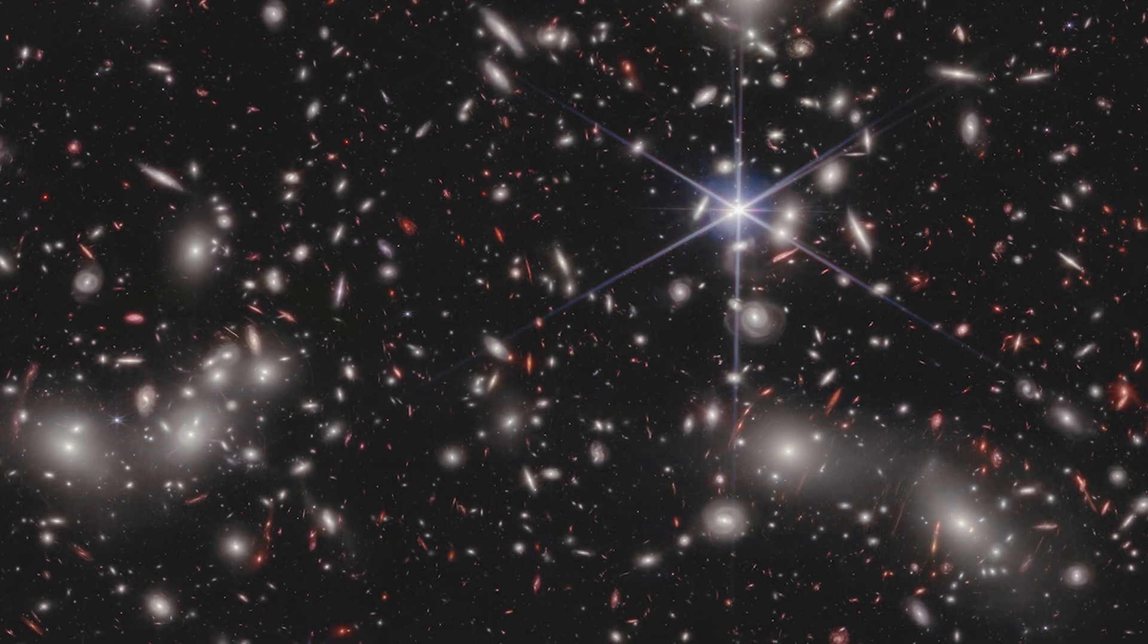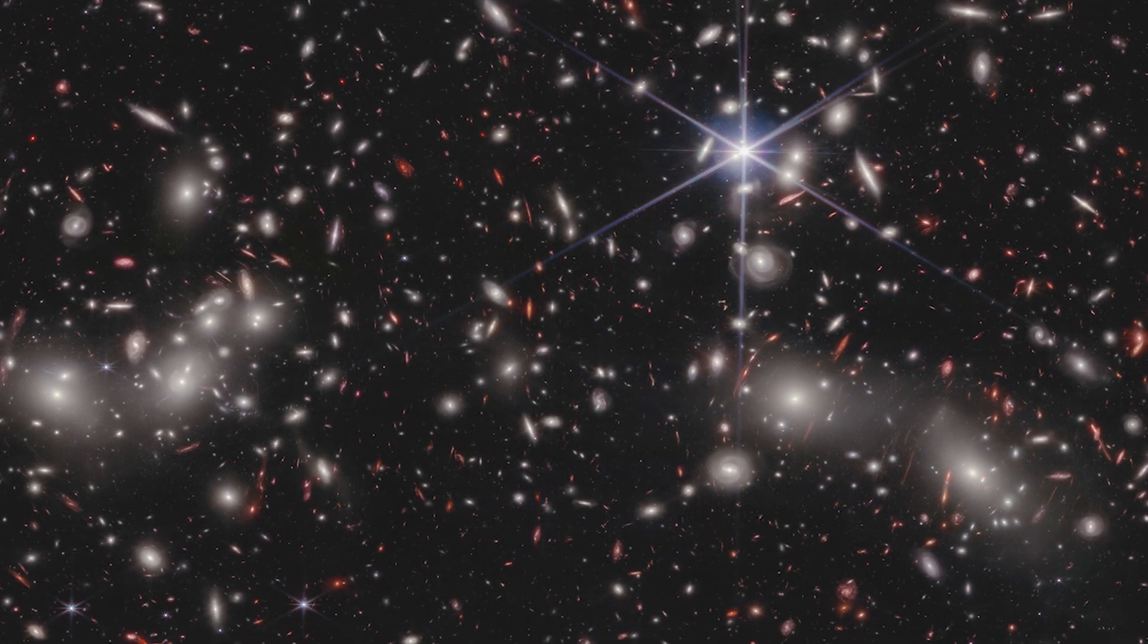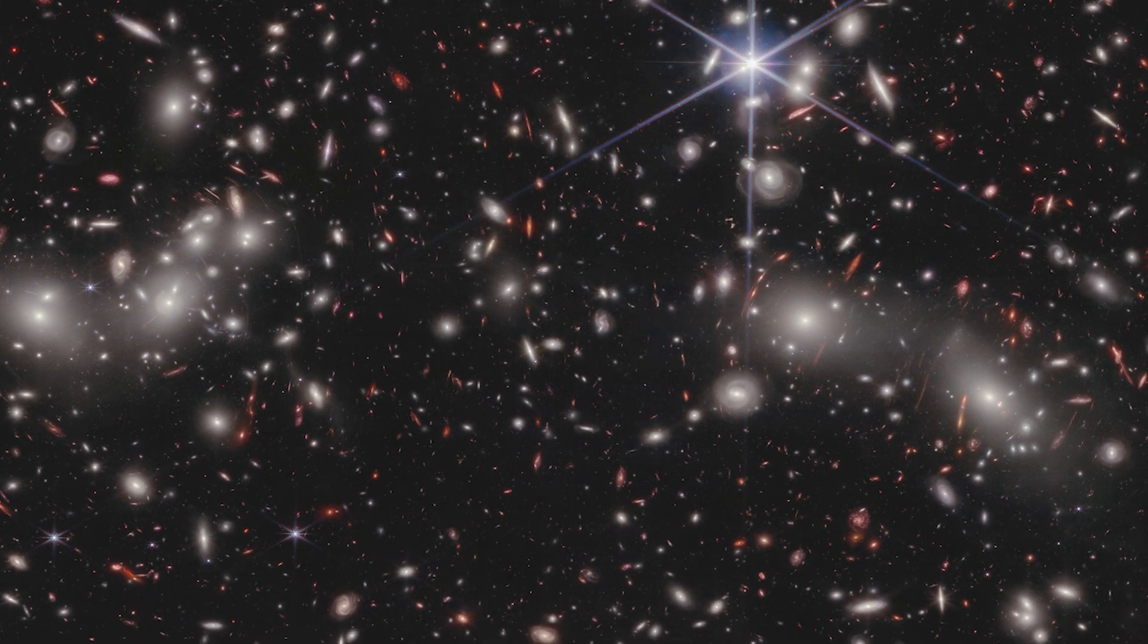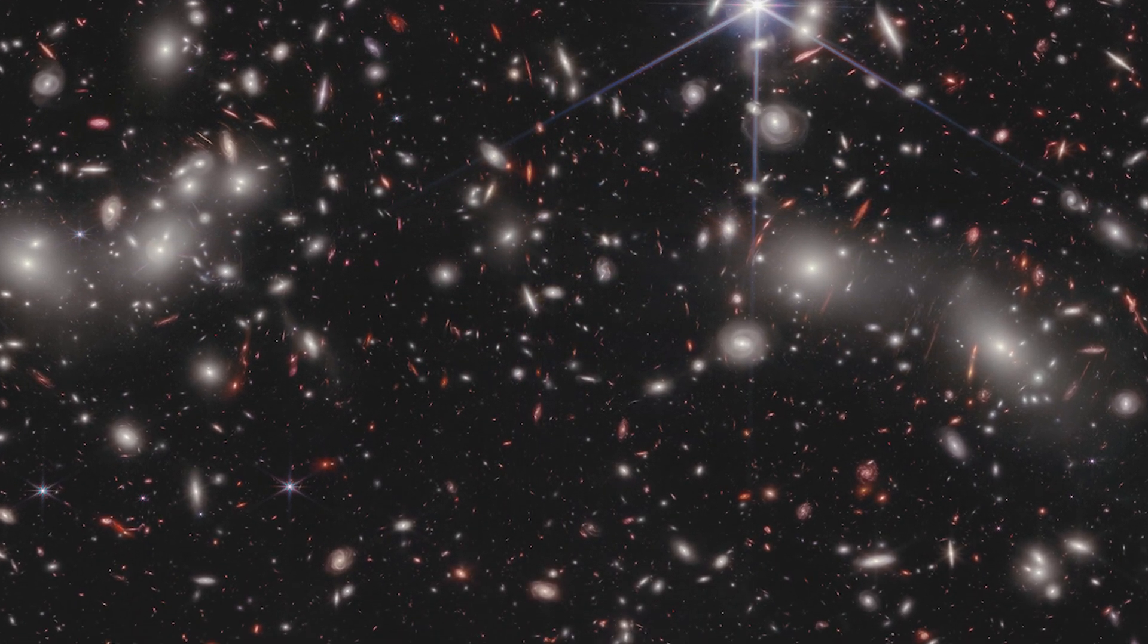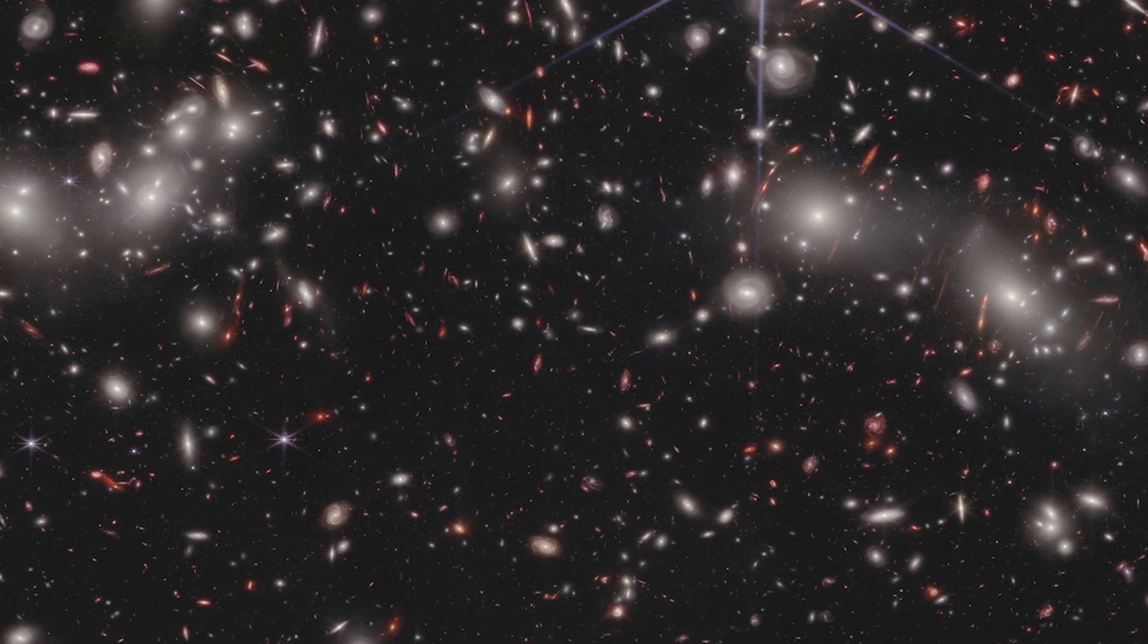The image shows a bright foreground star from our Milky Way. Surrounding the star are distant galaxies of Pandora's cluster, appearing as bright sources of white light surrounded by a hazy glow.